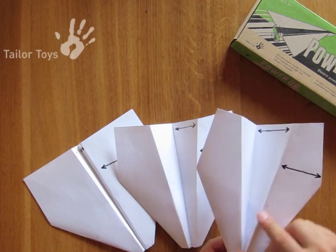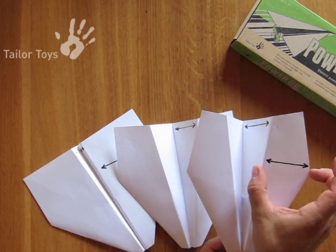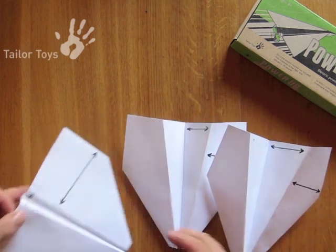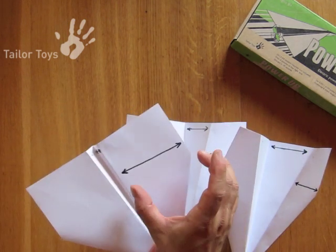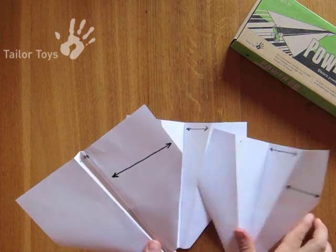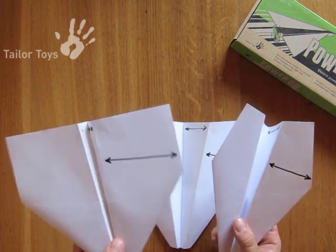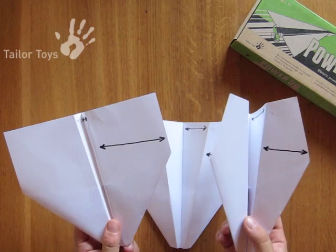Here you can see the location of the folding line creates a much smaller wingspan. On this side you can see the folding line creates a very large wingspan. So the main difference between these two is that this airplane will have more lift compared to this one.